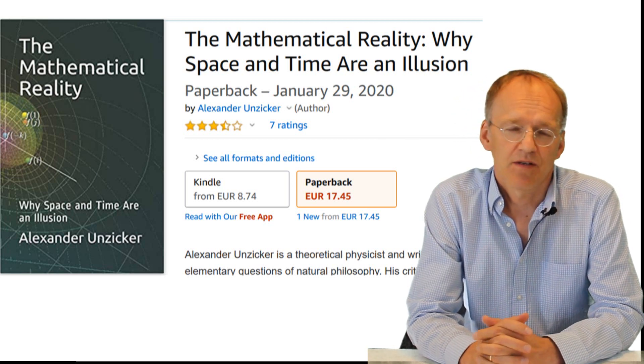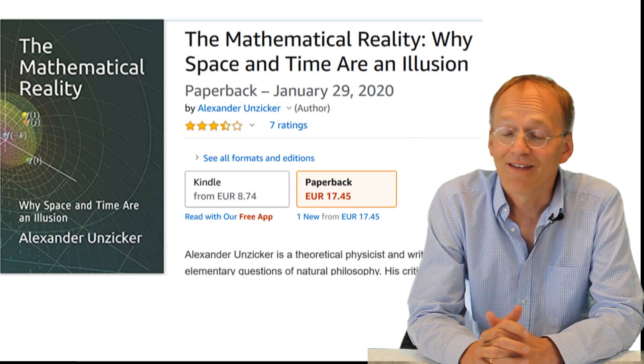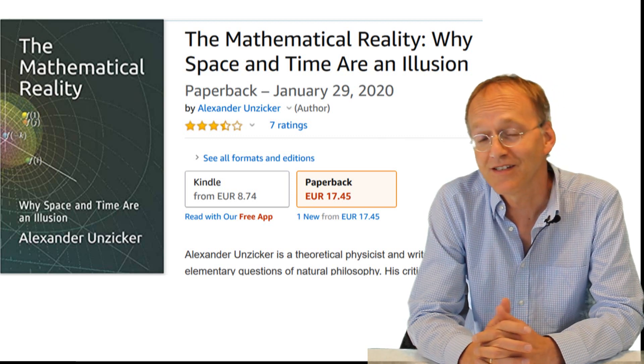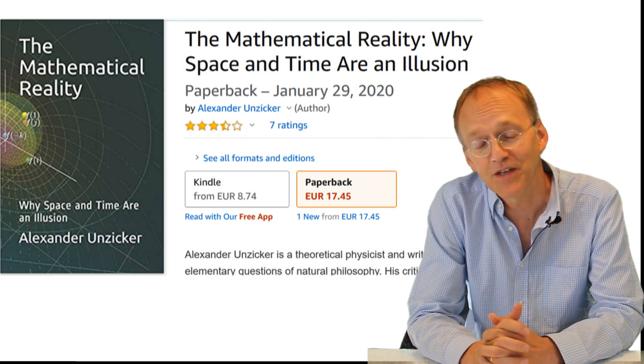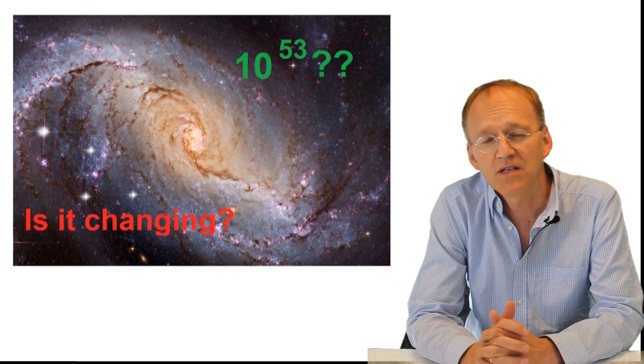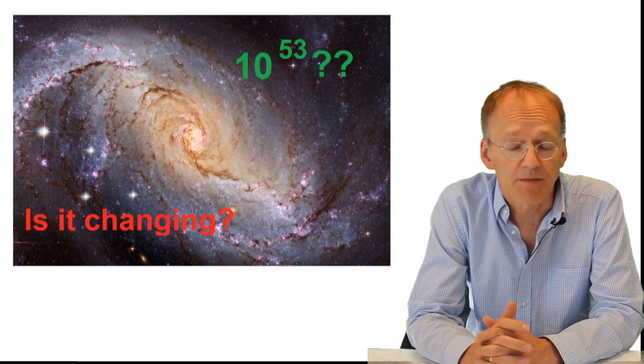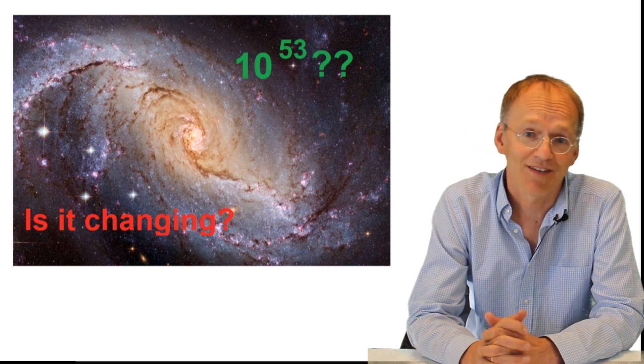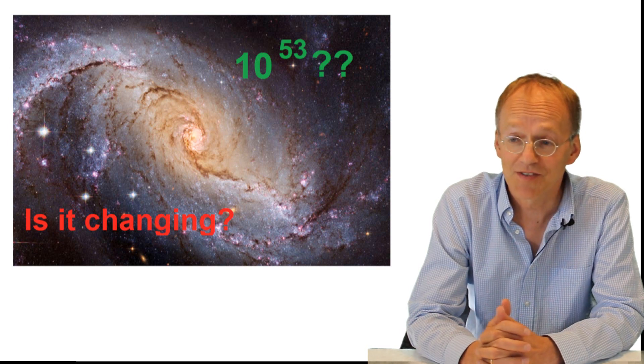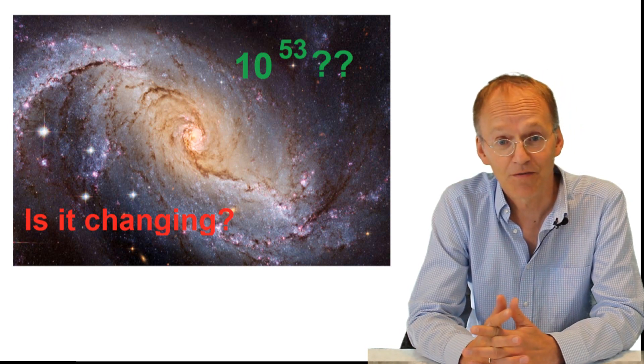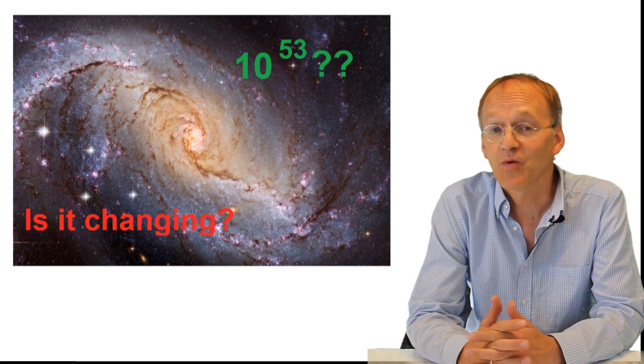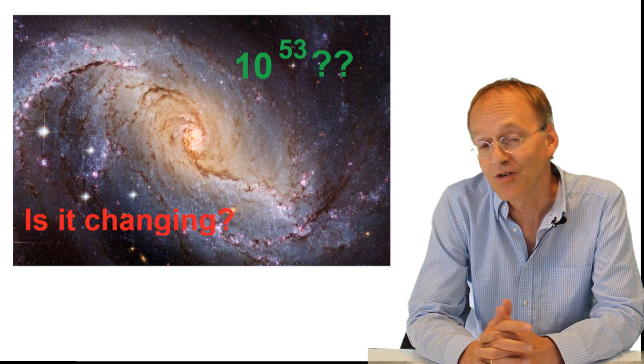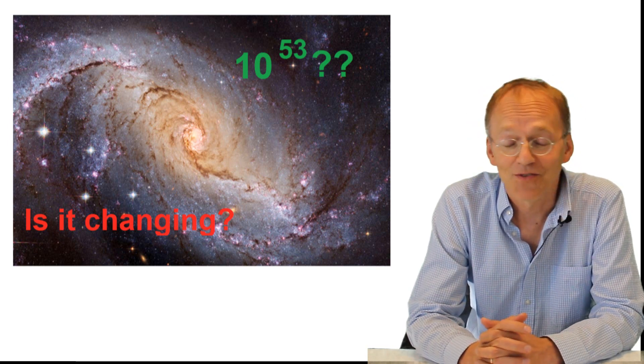We can measure the number 10 to the power of 53 and every cosmologist would assume it's just a random number representing an insignificant moment in the evolution of the history. But actually we haven't measured a change of that number either. So if a future genius physicist comes along and proves that time and space are illusions and we always must observe 10 to the 53, then the question arises: how do you deduce that number from pure math? And certainly the order of the monster group would be a good starting point.